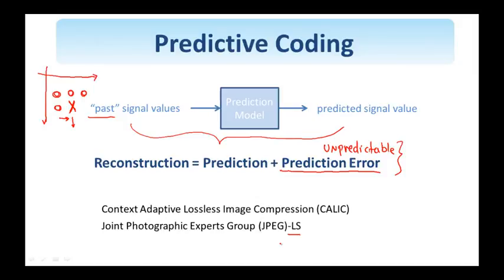But before we proceed, let's look at the question of why encoding the prediction error versus the original values saves bits. We will show an example here with a simple prediction model and try to argue why it is more efficient to encode the prediction error than the original signal.